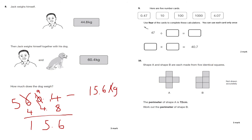Question 9: here are 5 number cards; use 4 of the cards to complete the calculations, using each card only once. For the multiplication: 4.07 times 10 gives 40.7. For the division: 47 divided by 100 gives 0.47.